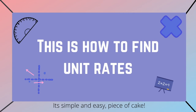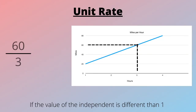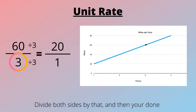This is how to find unit rates. It's simple and easy, piece of cake. If the value of the independent variable is different than one, divide both sides by that and then you're done.